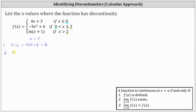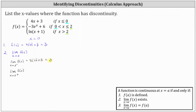Number two, we need to determine the limit of f(x) as x approaches zero. To do this, we'll consider the one-sided limits and see if they're equal. As we approach x equals zero from the left — values less than zero — we use the interval where x is less than or equal to zero. Using f(x) = 4x + 3 and performing direct substitution, the left-hand limit is 4(0) + 3 = 3.